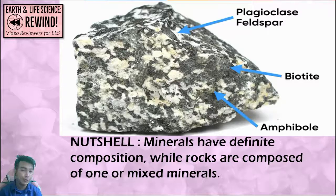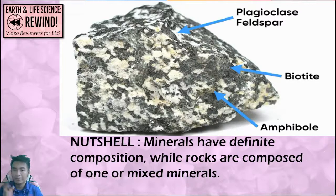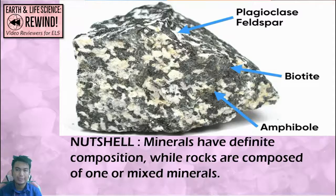For example, this rock is a mixture of feldspar, biotite, and amphibole — those are minerals. But this rock is called granite. So granite, as a rock, is a mixture of minerals like feldspar, biotite, and amphibole.